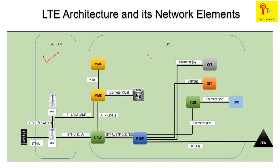E-UTRAN consists of the eNodeB portion, and the EPC consists of the MME, HSS, SGW, PGW, and PCRF. This is the complete core network part.